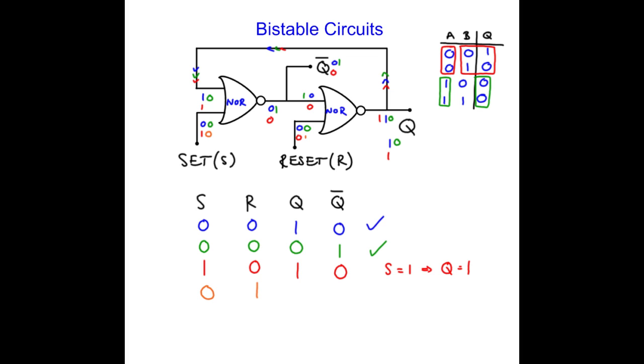So starting from the reset, 1 and 0 gives me 0. The 0 gets fed around, so this becomes 0. 0 and 0 give me 1. Q bar becomes 1. So this becomes 1. 1 and 1, reset 1, 1 and 1 gives me 0.